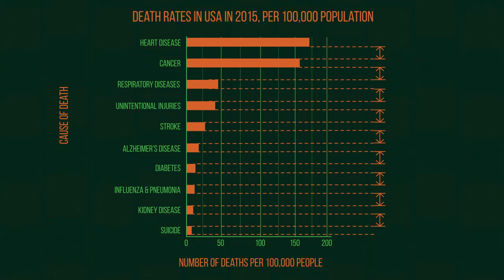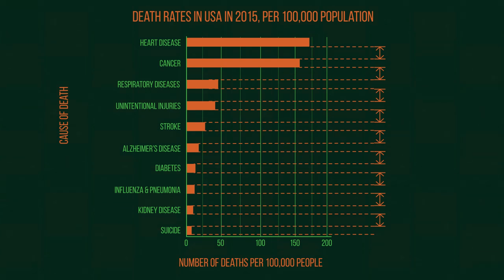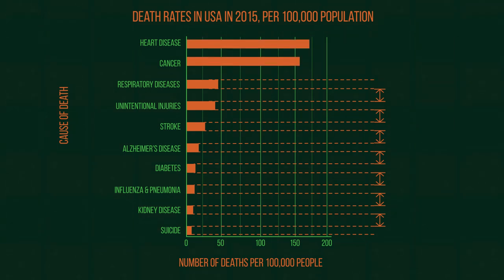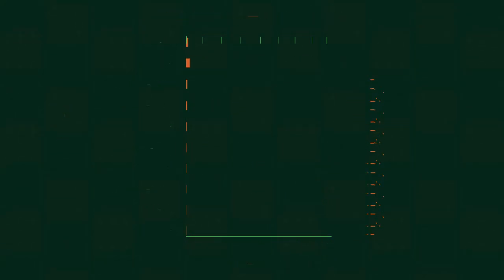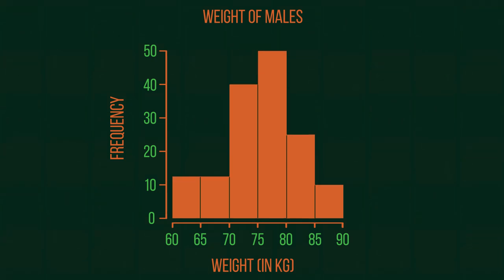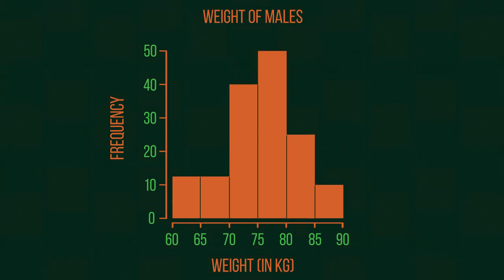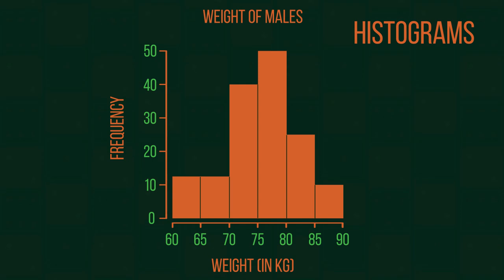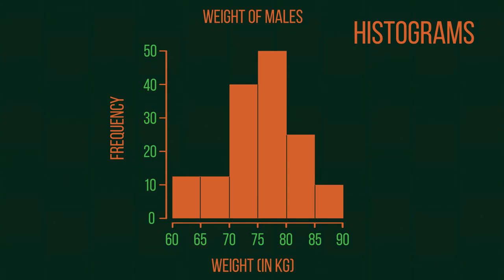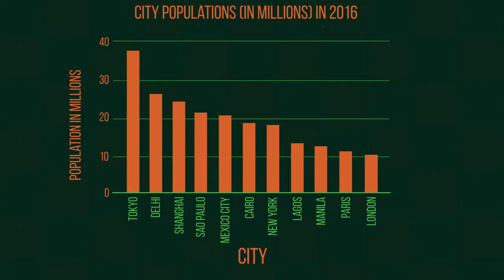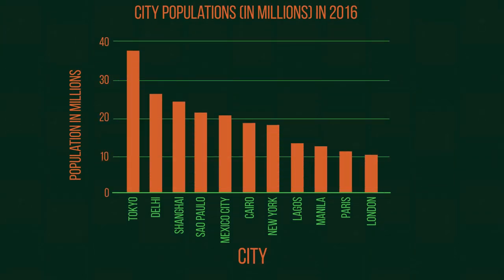There is a gap between each bar. Most bar graphs have this gap because the data is discrete — you're either in one group or in another group. There are some special bar graphs where the bars do touch, called histograms, which we'll look at in another video.